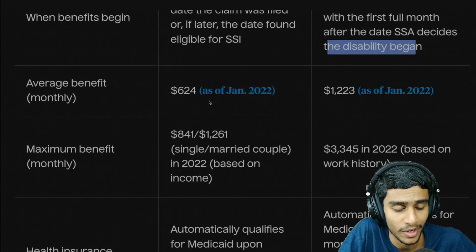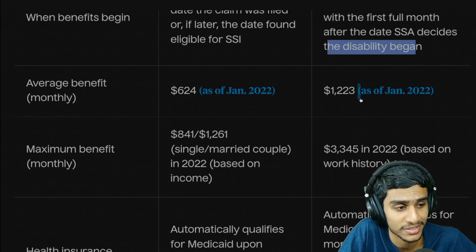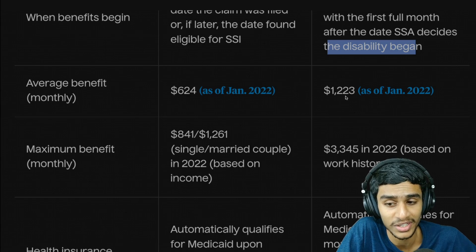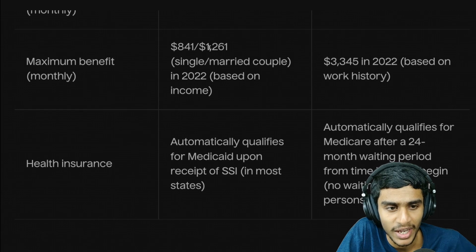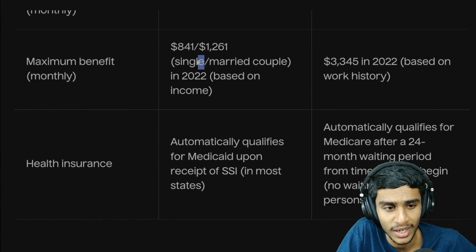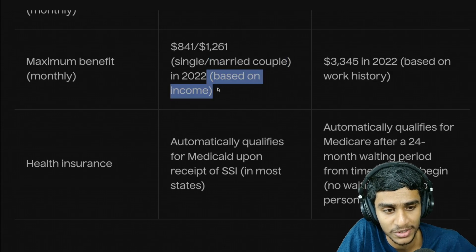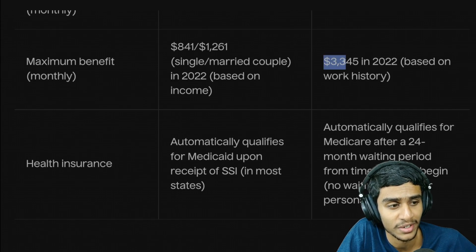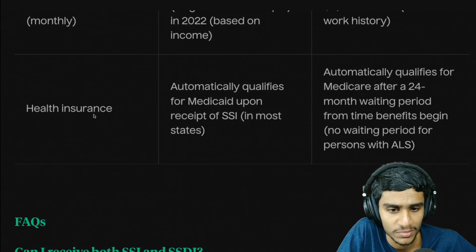The average SSI benefit is $624 while the average SSDI benefit is $1,223 as of January 2022. Maximum SSI benefits can go up to $841 for a single recipient or $1,261 for married couples, based on income. For SSDI, maximum benefits can go up to $3,345 in 2022, based on work history.